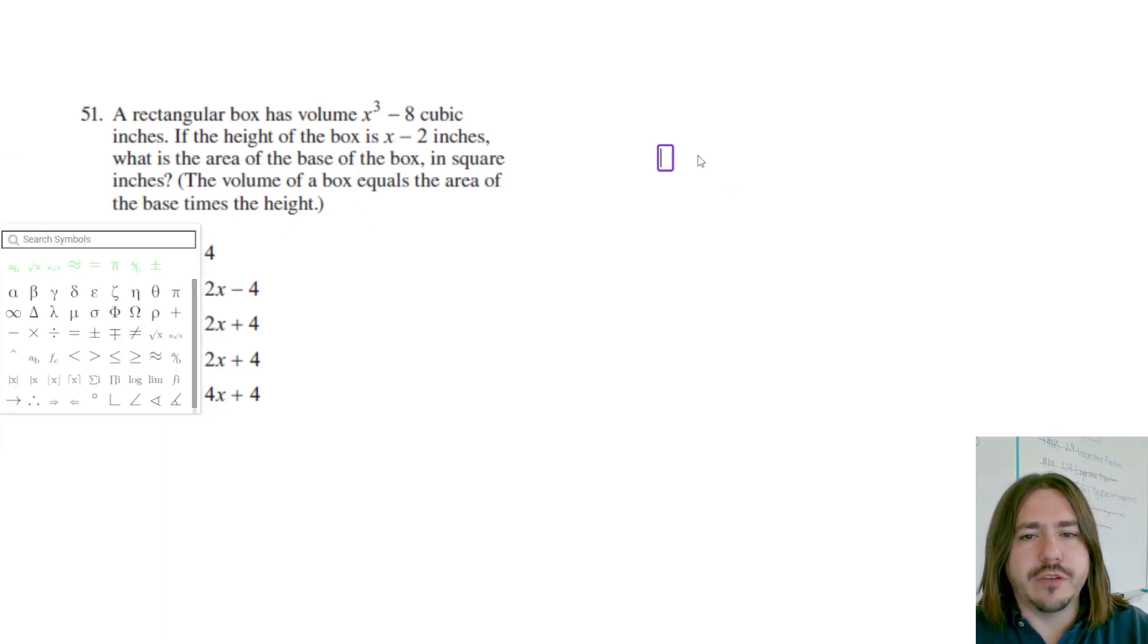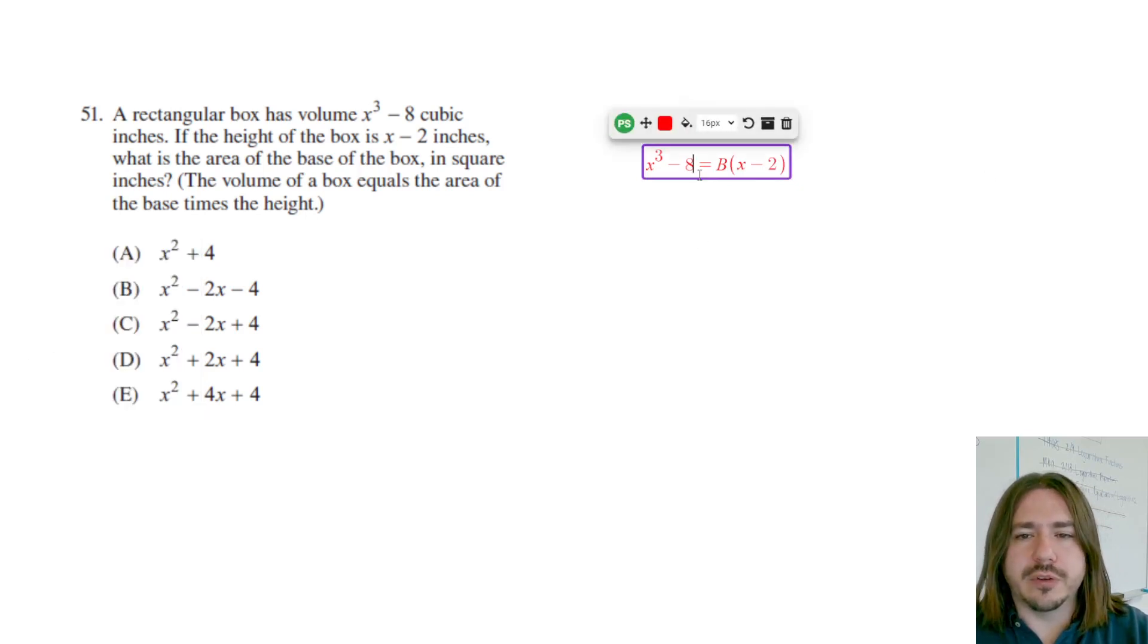And it even tells you that the volume of the box equals the area of the base times the height. So the area of the base here is what we're trying to find. The volume is x cubed minus eight and the height is x minus two. There are three ways we could go about doing this.